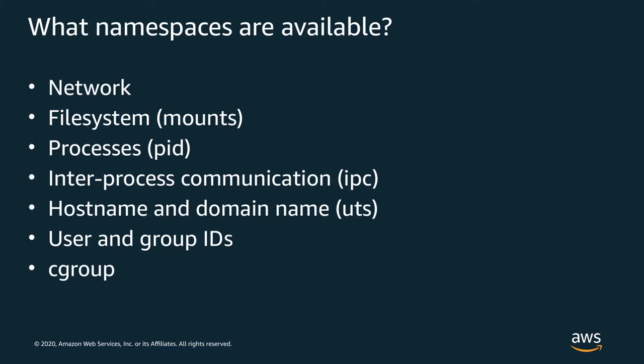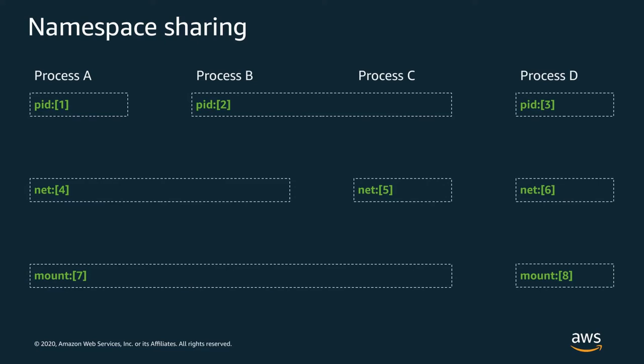Linux has a bunch of namespaces that cover different kinds of resources — you can see the namespaces available in recent versions of Linux on this slide. New namespaces are being developed as well; a timed namespace is expected to become available in newer versions. Just like with cgroups, processes can be in any combination of namespaces. You might have a mount namespace shared between most processes but want to run one in a separate network or PID namespace, or run a process with its own namespaces, much like a container.